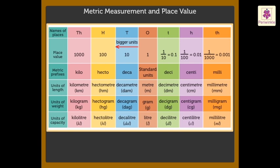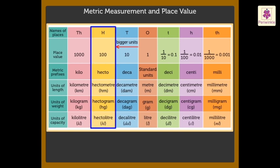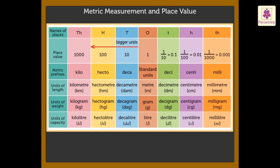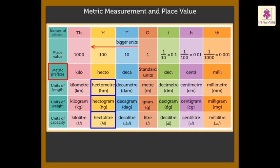Similarly, the units in the hundreds column are one hundred times bigger than the standard units. We name these as hectometer, hectogram, and hectolitre, as the prefix hecto means one hundred times.